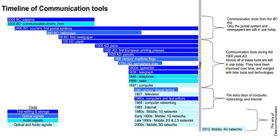1993 – Mosaic graphical web browser is launched. 1994 – Internet radio broadcasting is born. 1996 – Motorola StarTAC mobile phone introduced; it was significantly smaller than previous cell phones.